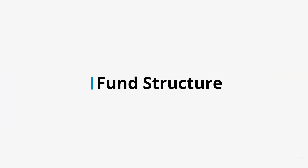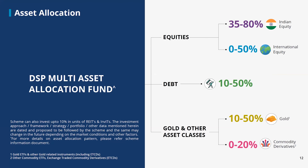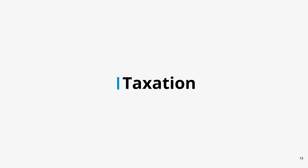What is the structure of the fund we are proposing? It is well diversified with mainly four asset classes in varying degrees of allocation to each: equities between 35–80%, international between 0–50%, debt and gold between 10–50%, and a provision to hold commodity derivatives as and when the opportunity arises.